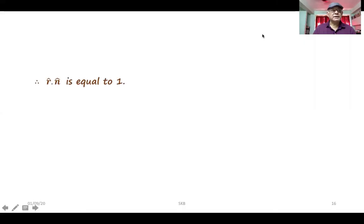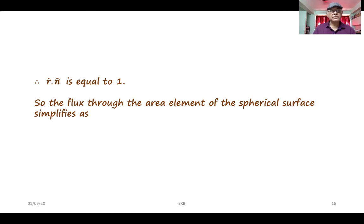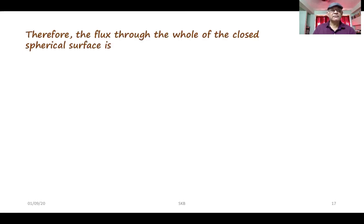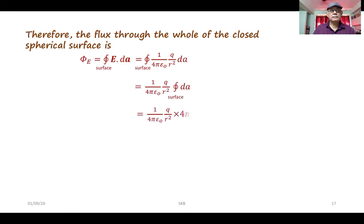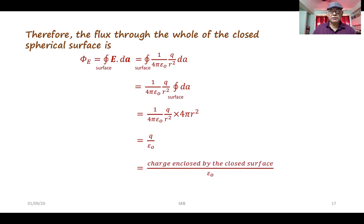The electric flux through the area element dA of the surface is E dot dA equal to 1 over 4 pi epsilon_0 times Q over r squared times dA times r-hat dot n-hat, where n-hat defines the direction of the area element and is radially outward. Since r-hat dot n-hat equals 1, the flux through the area element simplifies to E dot dA equal to 1 over 4 pi epsilon_0 times Q over r squared times dA. Therefore, the flux through the whole closed spherical surface is Q over epsilon_0, which is the charge enclosed by the surface divided by epsilon_0 — as per Gauss's law.